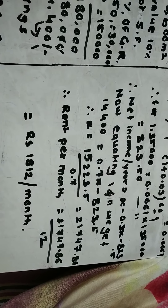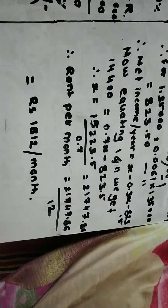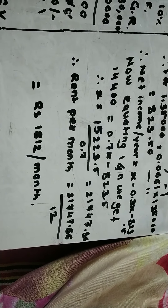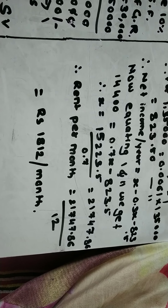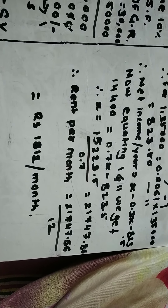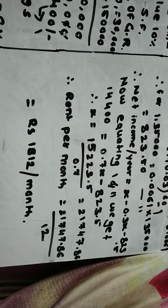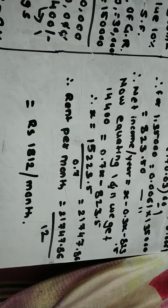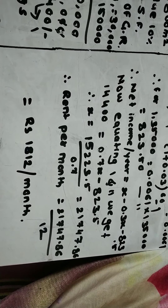Solving for x: x = 15,223.5 divided by 0.7, which gives x = rupees 21,747.86. This is the annual rent. To find the rent per month, divide the annual rent by 12. So the rent per month equals 21,747.86 divided by 12, which comes to rupees 1,812 per month.